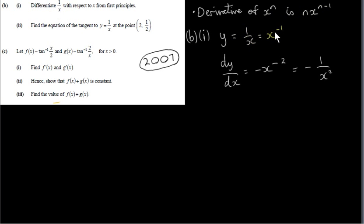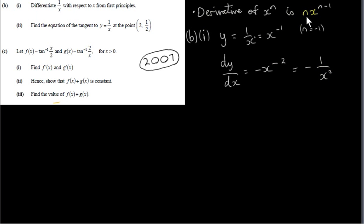1 over x can be written as x to the power of minus 1 — it's 1 over x to the power of 1. Applying this result with n equal to minus 1, we get minus 1 times x to the power of minus 2. We can write x to the power of minus 2 as 1 over x squared. So you could apply this general result and plug in minus 1, however we can just do this directly from first principles.